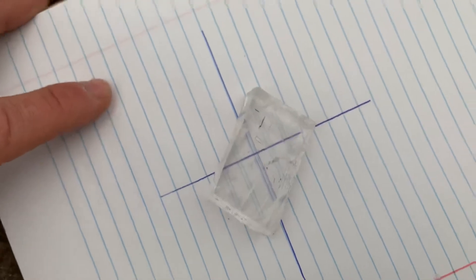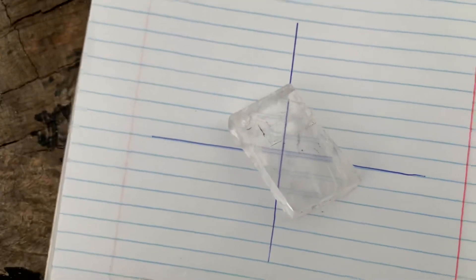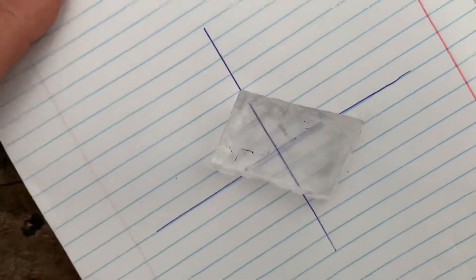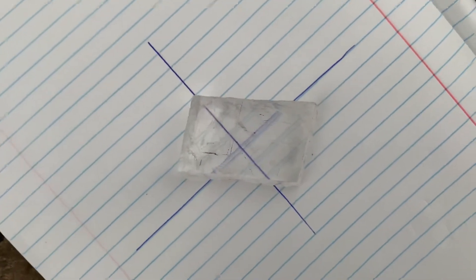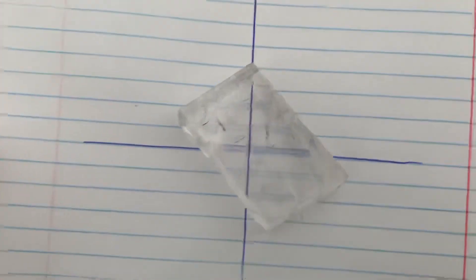Because if it had something to do with the direction of the sun, that line would change as I turn this whole platform without moving the Iceland spar. I'm moving everything together. Notice there's no change. Has nothing to do with the direction of the sun. This is all double refraction of the Iceland spar.